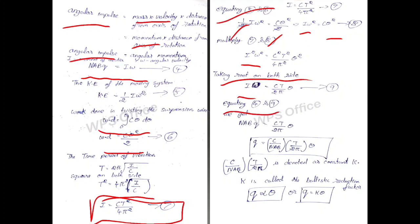Equating 4 and 9, so that I get NABq equals C T theta by 2 pi. Q is equal to C by NAB times T by 2 pi times theta. The C by 2 pi is denoted as constant K, is called as a ballistic constant. So that the final current directly proportional to the deflection of the coil. This is called ballistic equation.